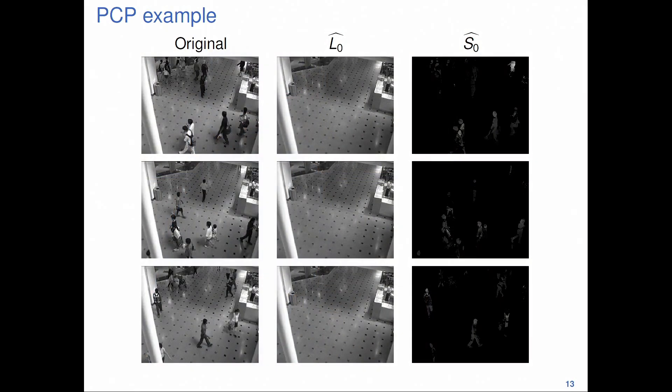Here is a PCP example from video surveillance. You can think of each row as a frame from video. On the left is the original video frames; the middle column shows the low-rank matrix results — the consistent patterns from frame to frame. You can see it perfectly picked out the background of these videos: the bar, the column, the floor, the trash can. These are consistent patterns. You can think of applying this and obtaining consistent exposure patterns in our population.